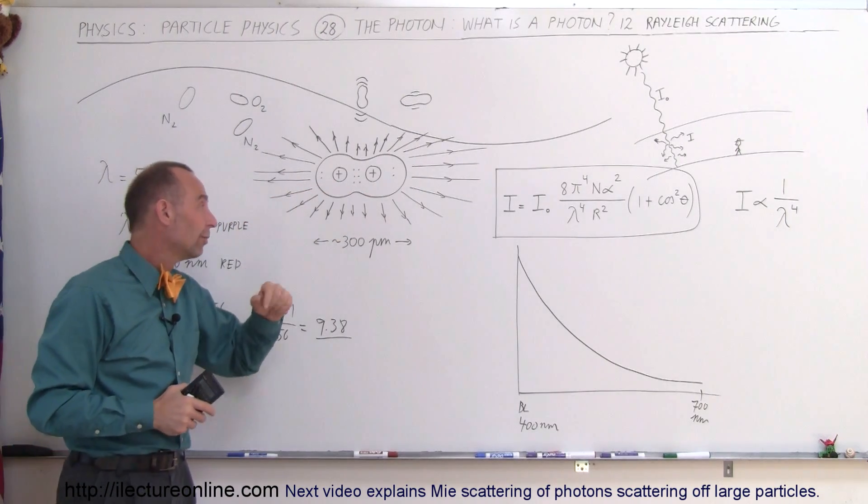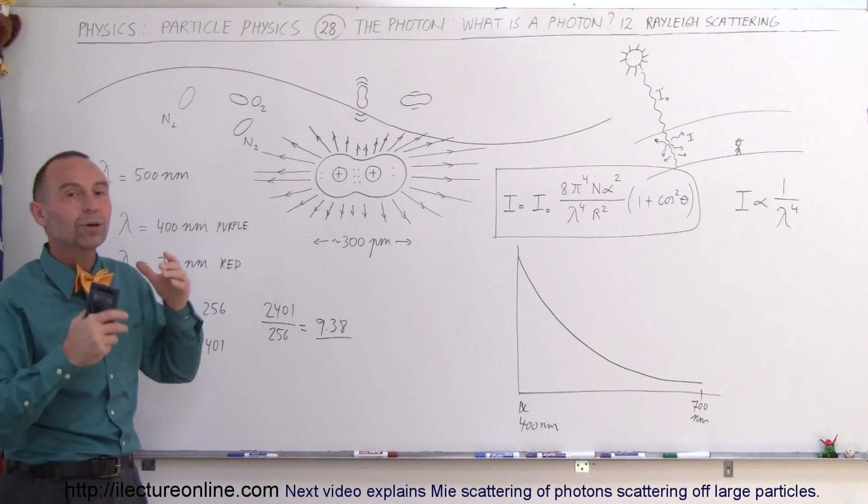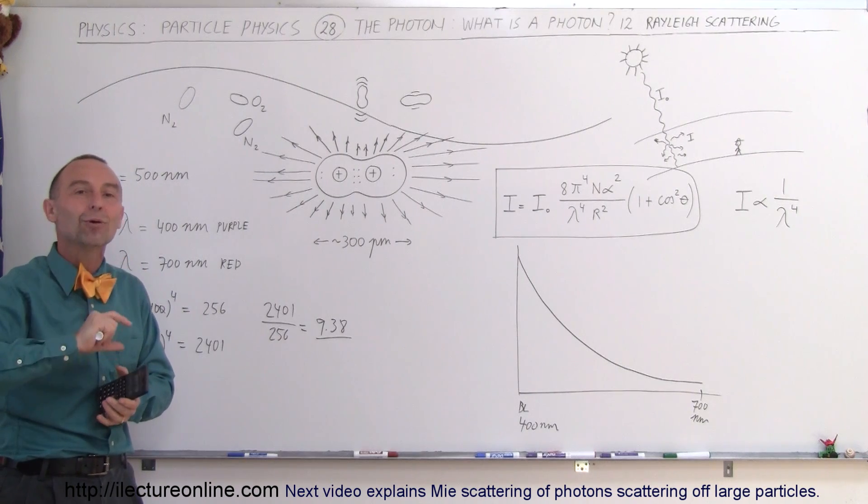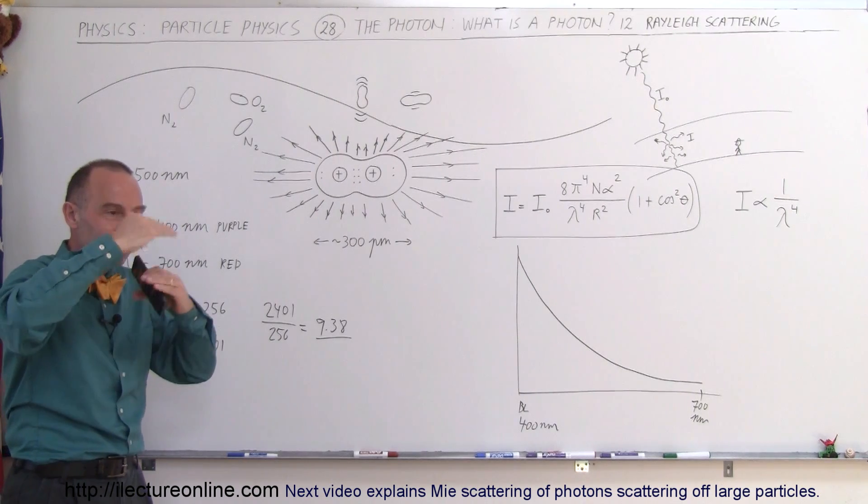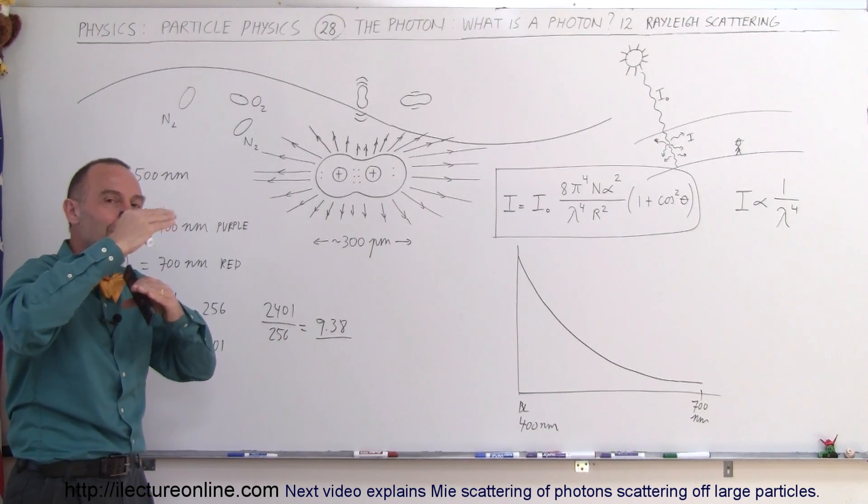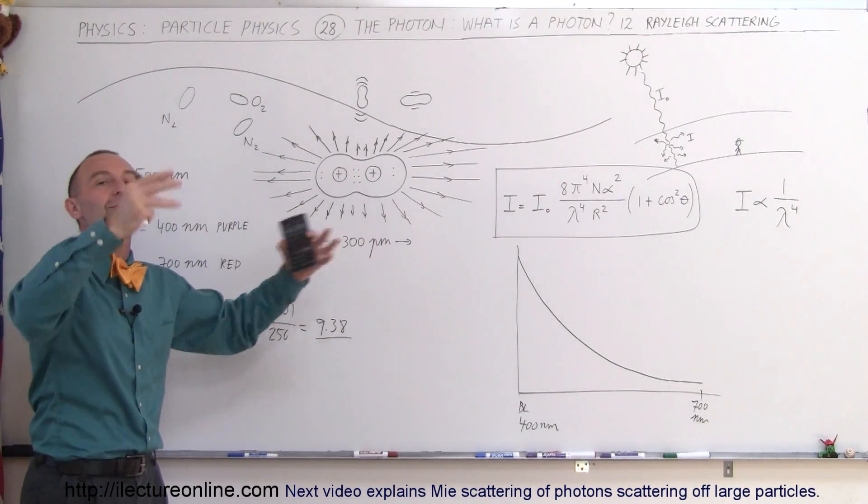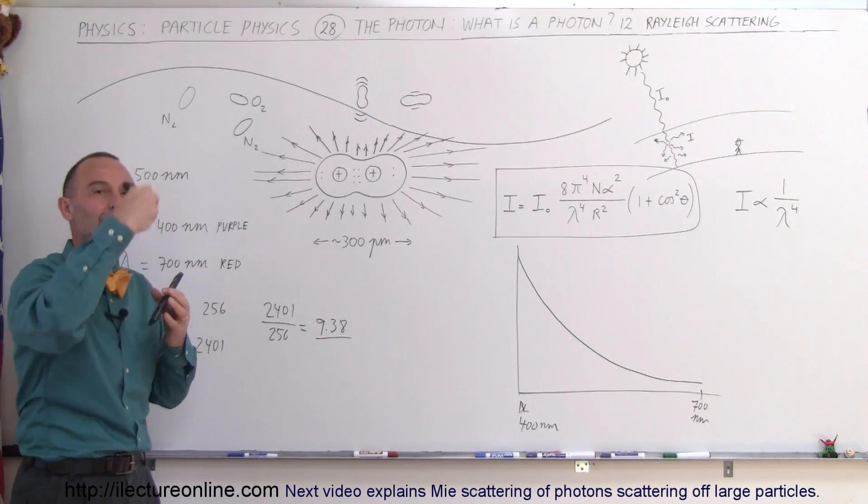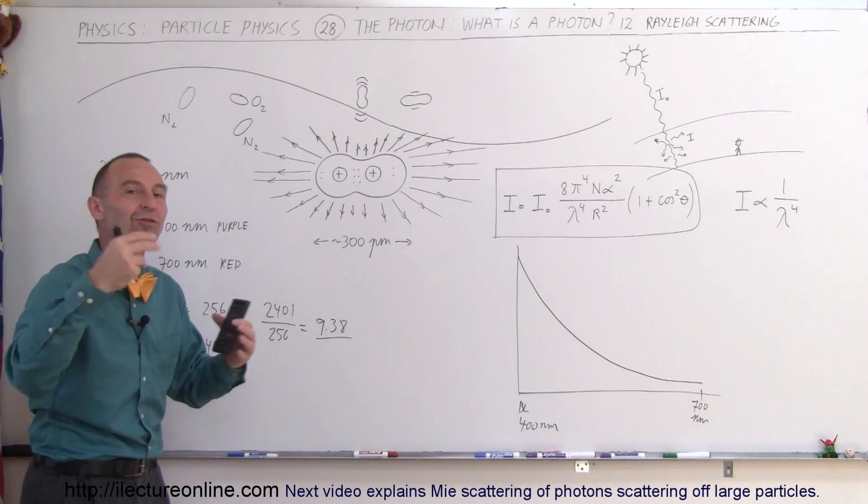So basically these nitrogen and oxygen molecules become like radiating dipoles. It causes the electrons inside to vibrate according to the frequency of the photon and then re-radiate that energy back out. So they temporarily absorb and re-radiate out the energy of a photon.